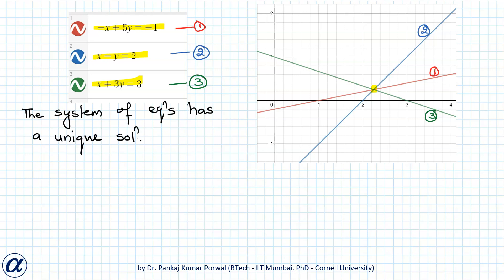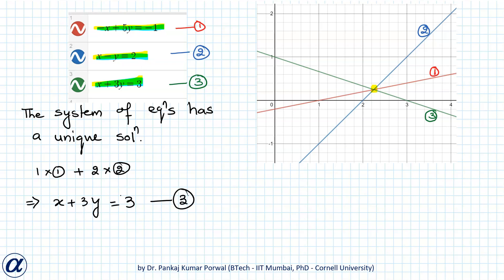Looking carefully, these three equations are not linearly independent. In fact, if I compute 1 × (equation 1) + 2 × (equation 2), I get x + 3y = 3, which is equation 3. So there are only two linearly independent equations in the system. Since the number of unknowns is also 2, the number of linearly independent equations equals the number of unknowns, so the system is consistent and has a unique solution.